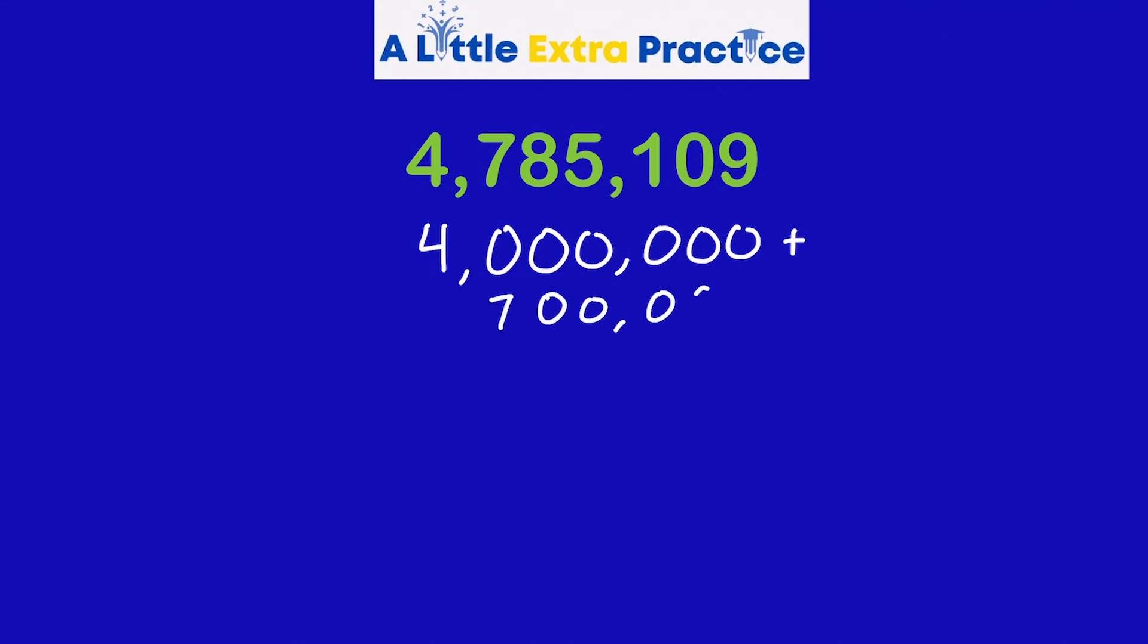Plus, the 7 in the 100,000s. So this actually looks like the big addition problem that expanded form really is. The 8 in the 10,000s. You guys know me, I don't have the neatest handwriting, but when I'm doing this, I do really practice my best handwriting even though it might not show. A 1 in the 100s. Nothing in the 10s. And then a 9 in the 1s. If I was going to add these up, it would add up to 4,785,109.